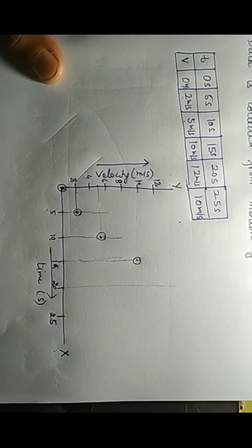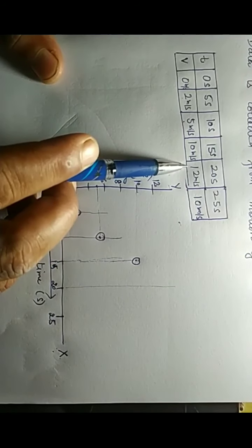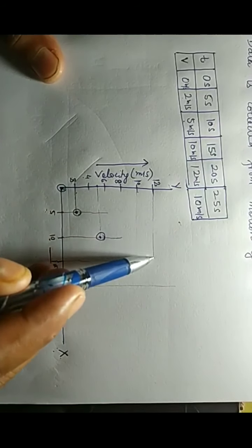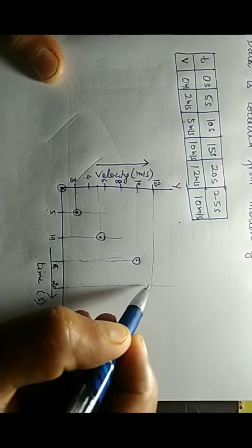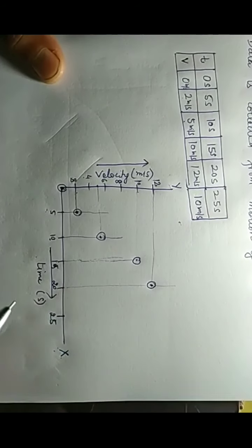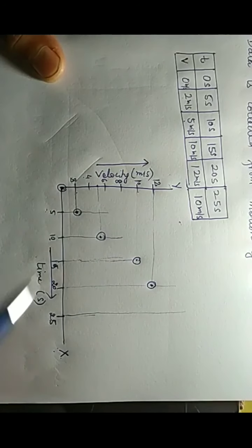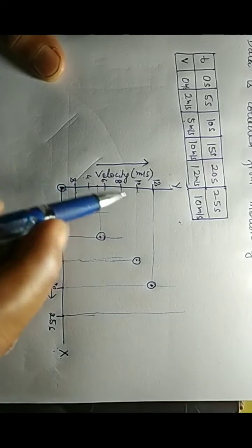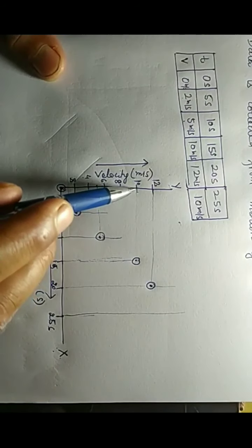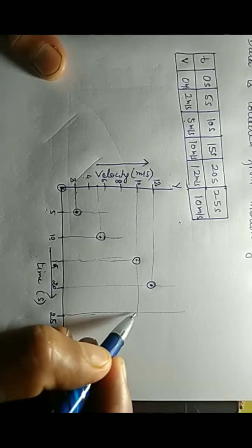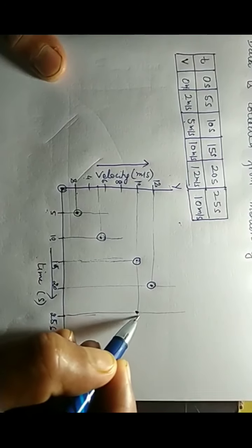At 20 seconds, the velocity reaches 12 meters per second, which is the maximum velocity. I draw a horizontal line from there — that is our fifth point. The last point is at 25 seconds with a velocity of 10 meters per second. I draw a vertical line from 25 and a horizontal line from 10; where they meet is our final point.